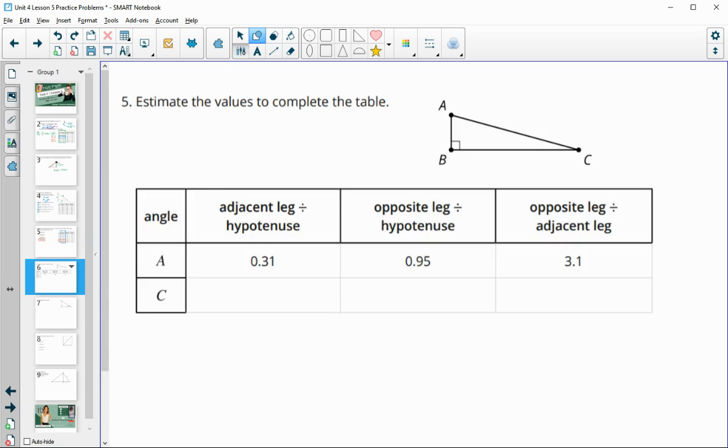Number five, estimate the values to complete the table. Remember that the adjacent divided by hypotenuse and opposite divided by hypotenuse in complementary angles or angles that add to 90, which A and C do, will just switch. So the adjacent divided by hypotenuse for A is 0.31, so for C, it's going to be 0.31 for the opposite over hypotenuse.